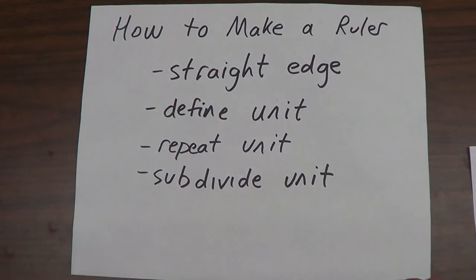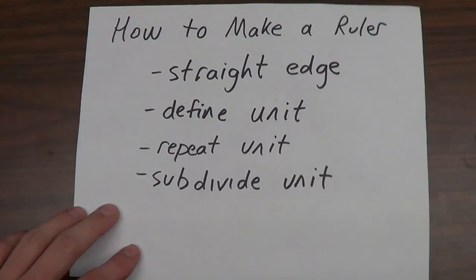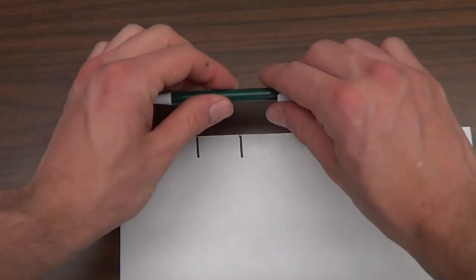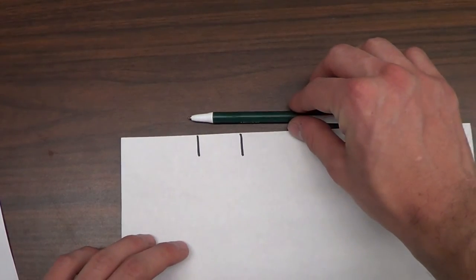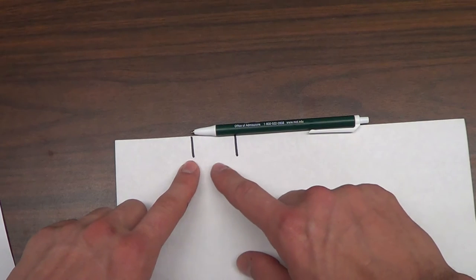So we need some sort of unit, and if we want to make something more precise than just this large, we need to subdivide that.